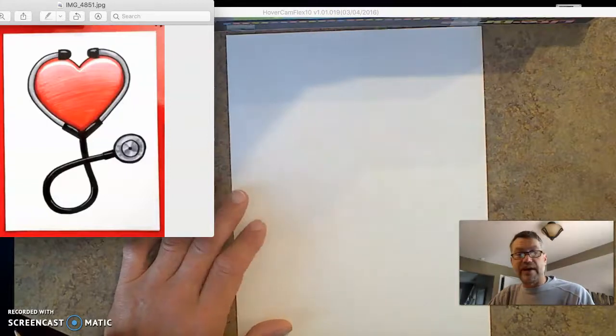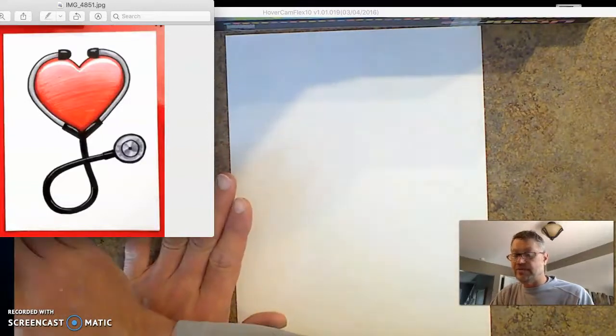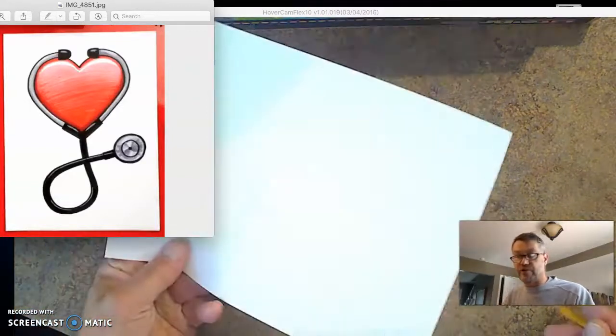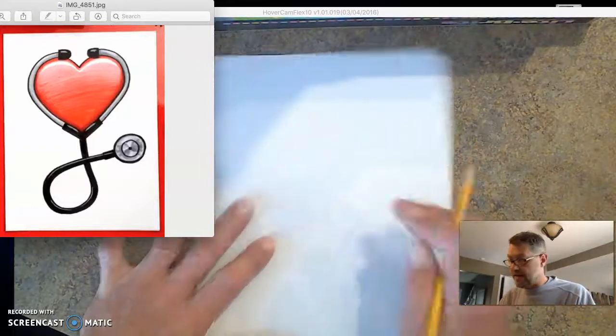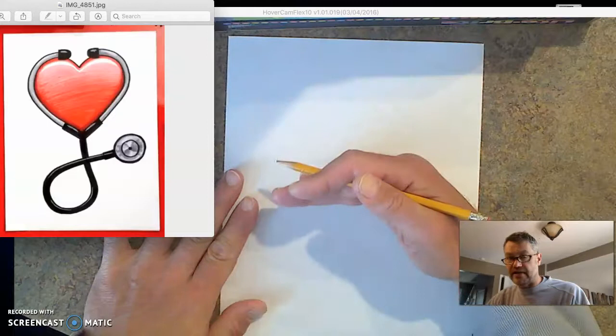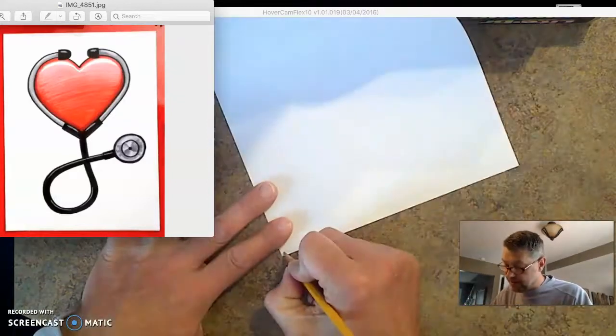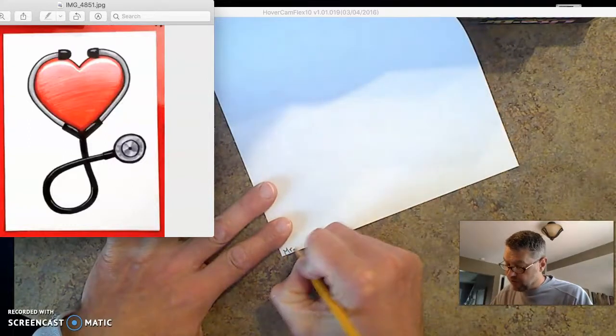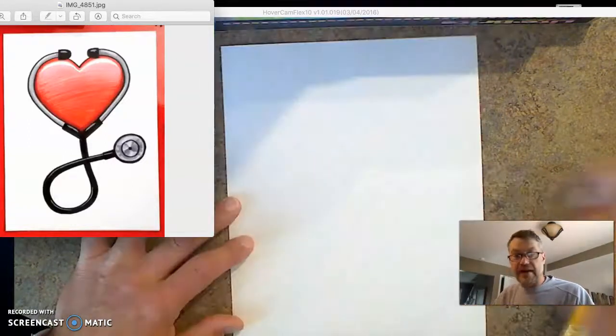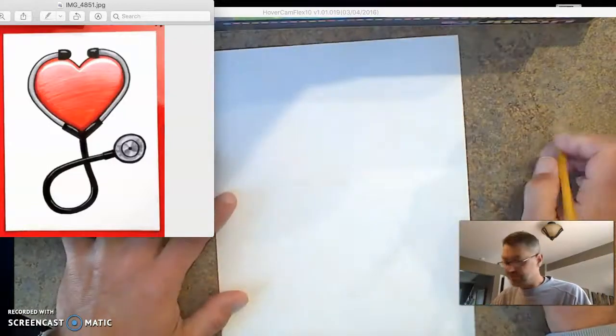So the first thing we're gonna do today is, and if you don't know how to draw a heart, don't worry because I'm gonna show you. I'm just using scrap paper and a pencil and I'm working vertically. Vertical is up and down, horizontal is sideways. We always put our name right in the corner. So there's my name down in my corner.